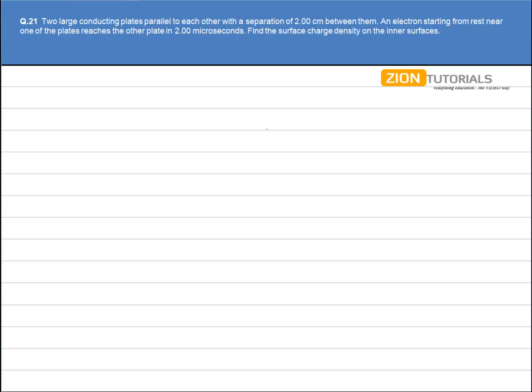Two large conducting plates parallel to each other with a separation of 2 cm between them. An electron starts from rest near one of the plates and reaches the other plate in 2 microseconds. Find the surface charge density on the inner surfaces.